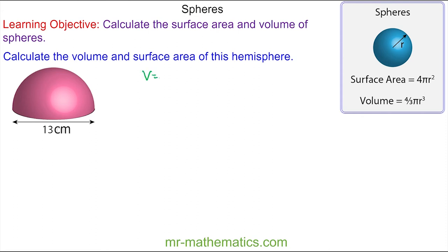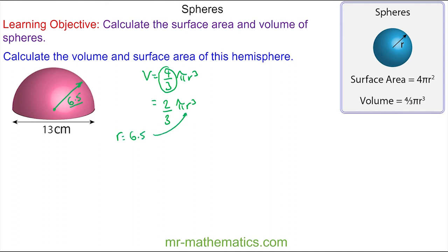To work out the volume we use the formula four-thirds πr³, but that would be for a full sphere. This is half a sphere, so we're going to take half of four-thirds, which gives us two-thirds of πr³. Because we've been given the diameter we need to work out the radius, which is half of that: 6.5 centimeters. Substituting in 6.5, the volume is two-thirds of π multiplied by 6.5 cubed, which gives approximately 575 centimeters cubed to three significant figures.